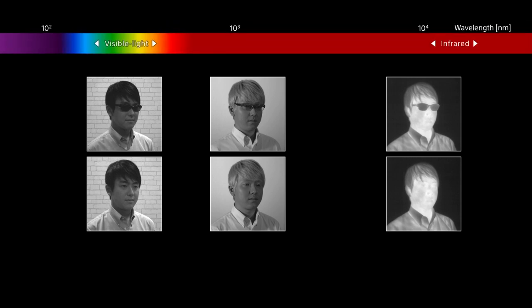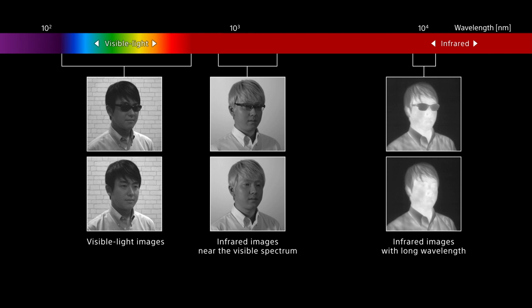What else differs when wavelength changes? These images are taken by an infrared camera that captures from visible light to long infrared rays. Having long wavelengths, infrared images look completely different from visible light images that we normally see.